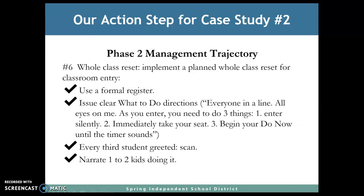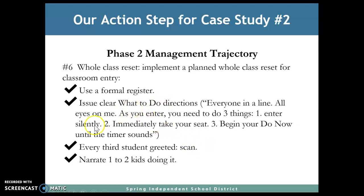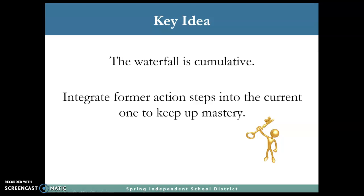On this particular scenario, we are still going to be in Phase Two of the management trajectory. The action step would be a whole class reset — implement and plan a whole class reset for class entry. The specific how-to would be: use a formal register; issue clear, what-to-do directions. Every third student greeted or scanned — narrate one to two kids doing it — to ensure they understand you're watching them. The what-to-do directions have to be very specific for the students. Think of the waterfall as a cumulative idea to integrate former action steps into the current one to keep mastery.